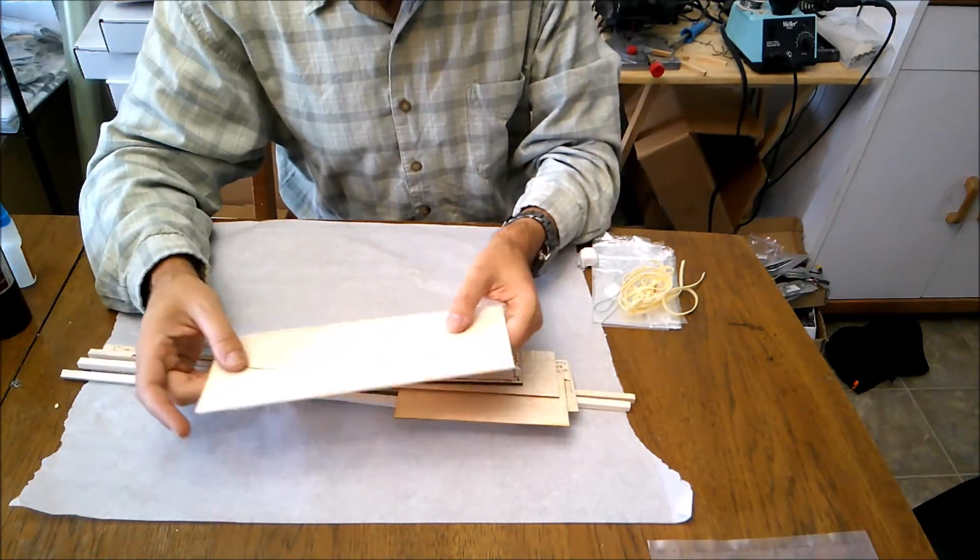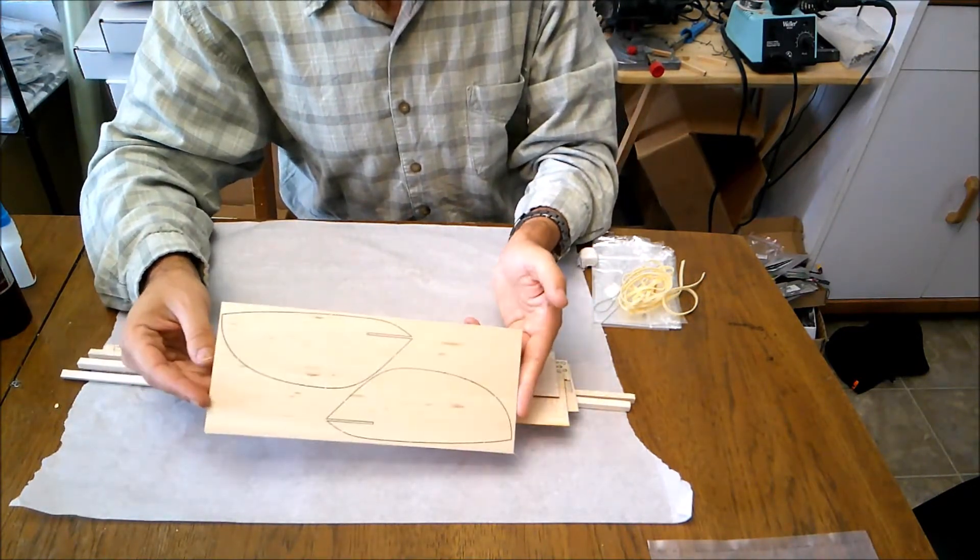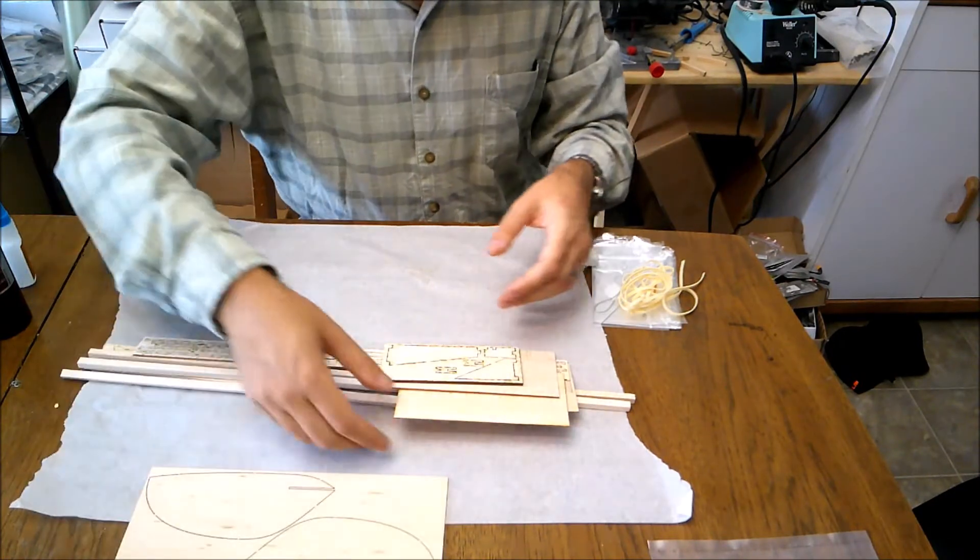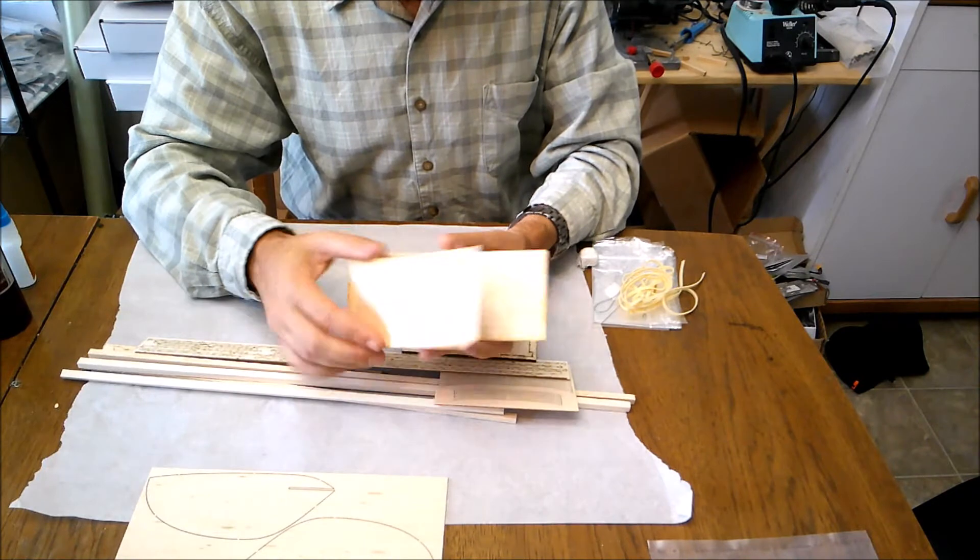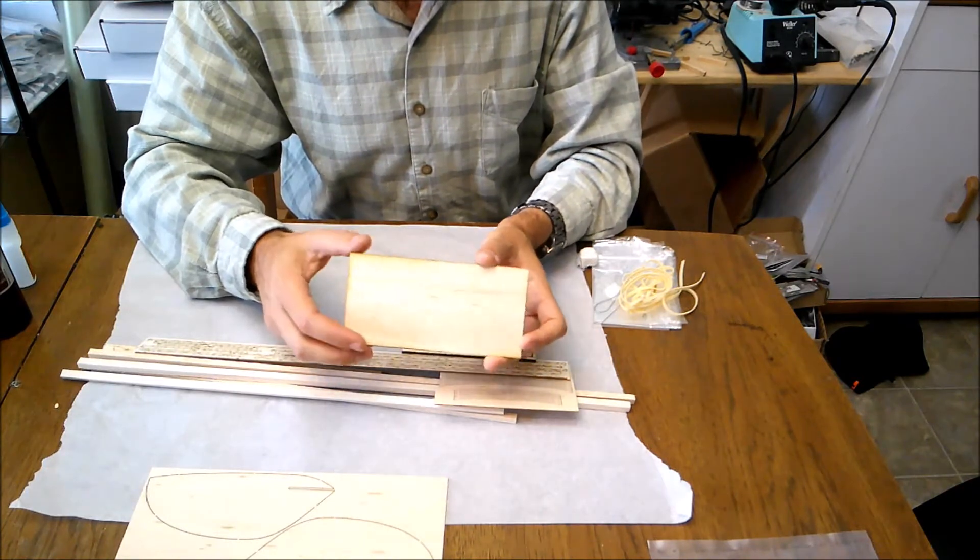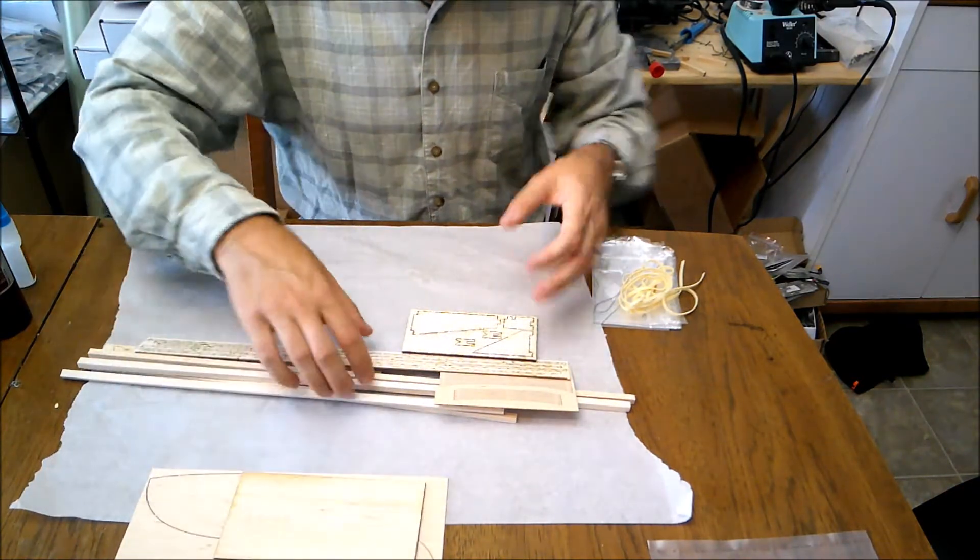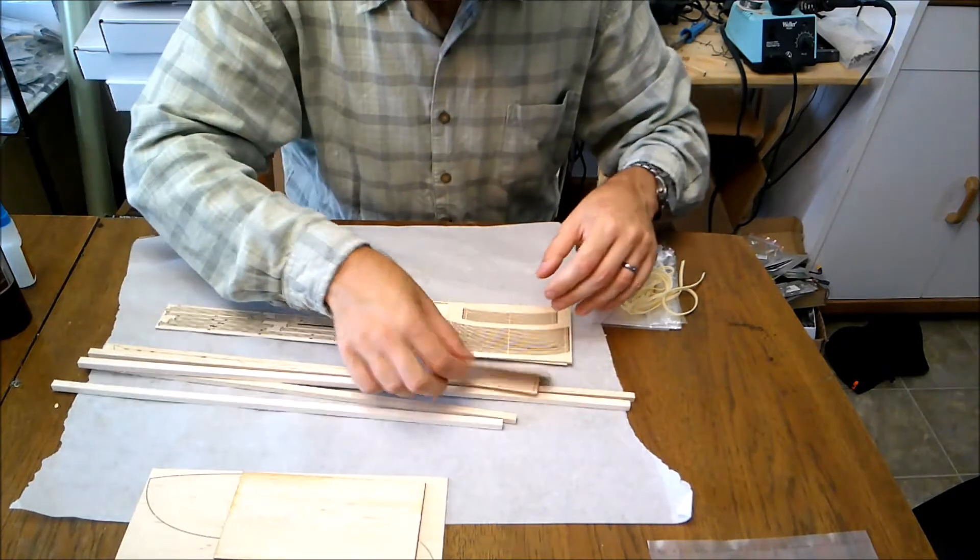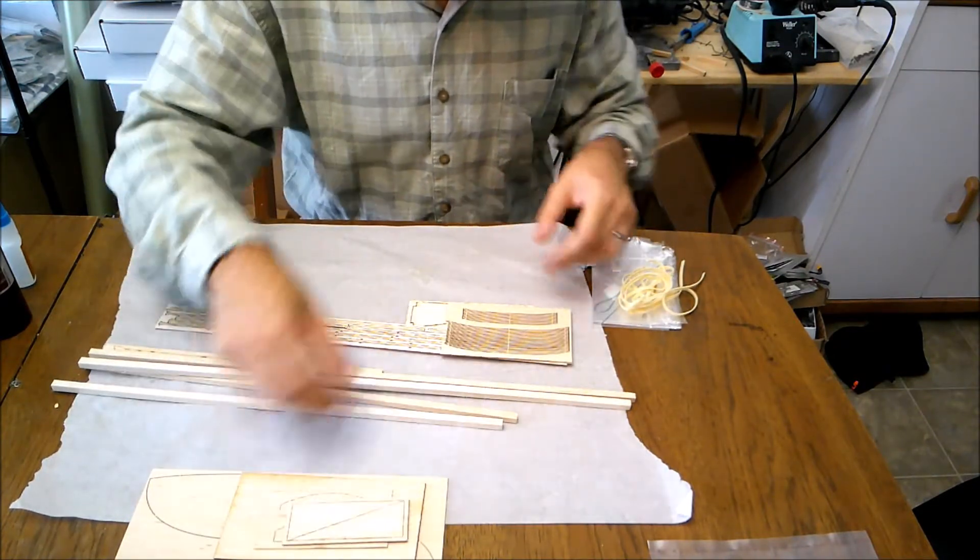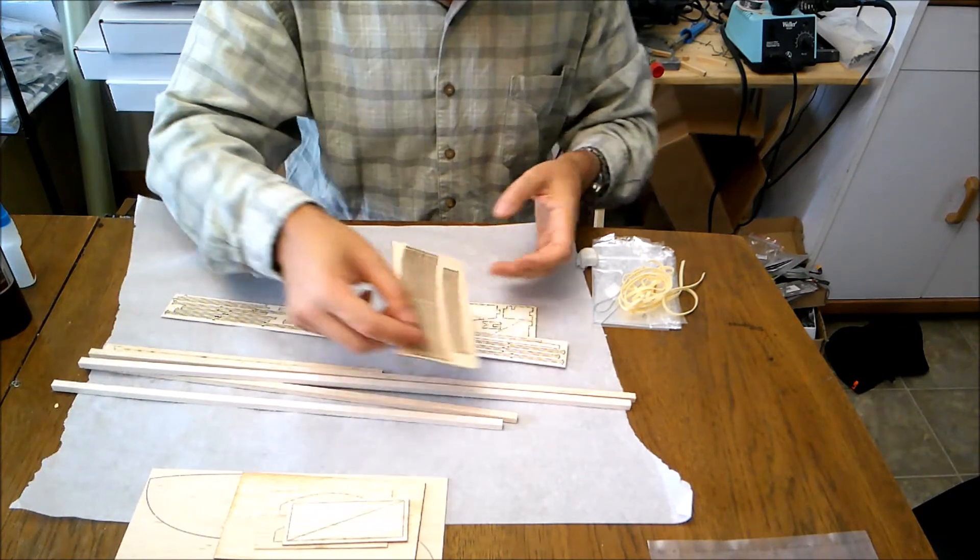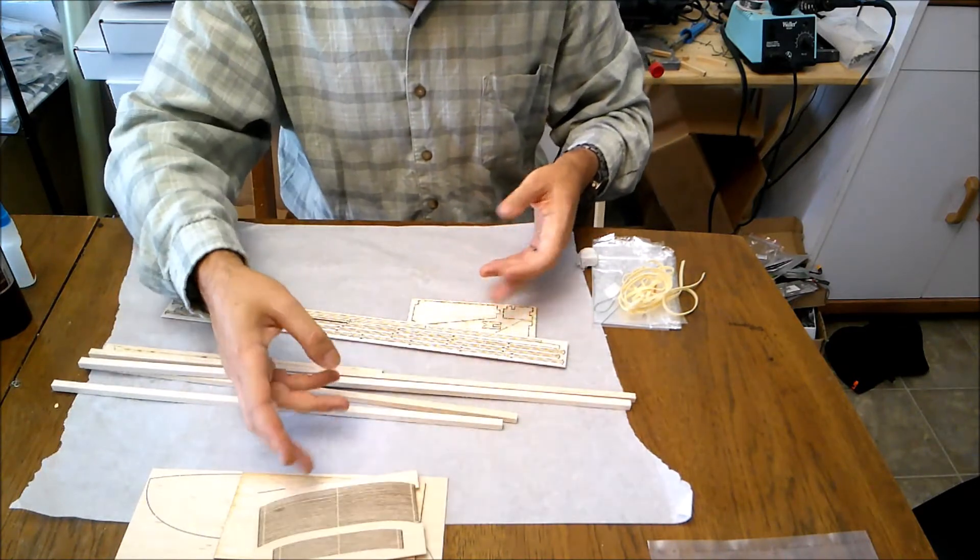You're going to have some thin 1/32nd sheet for your propeller blades. You're going to have two more pieces of 1/32nd balsa. So these are going to be for your propeller forming block. Also these are going to be the ends for the forming block. You'll have your dihedral gauges as well. A set of wing ribs, also 1/32nd balsa.